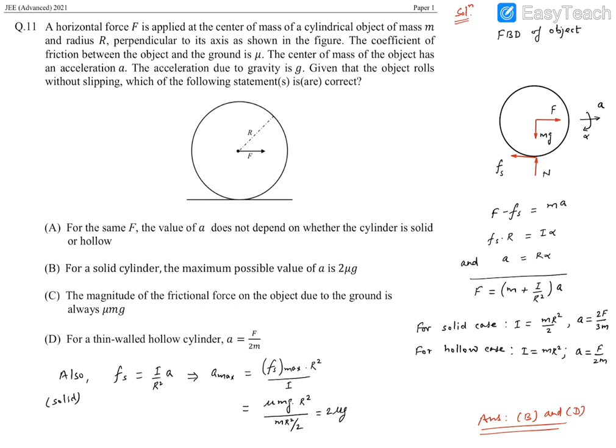Similarly for the hollow case, moment of inertia becomes mR². It becomes m + m, which is 2m. So acceleration is F/2m. Now we've found the accelerations.